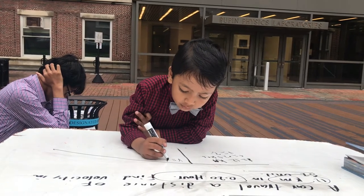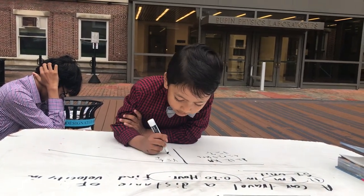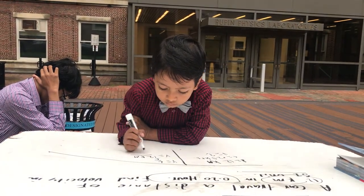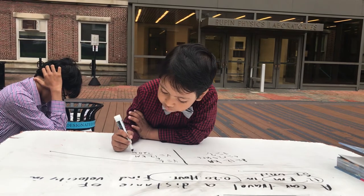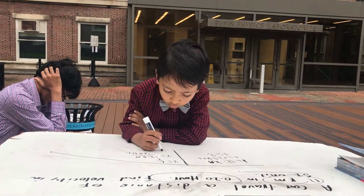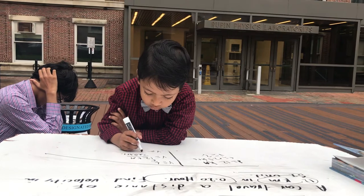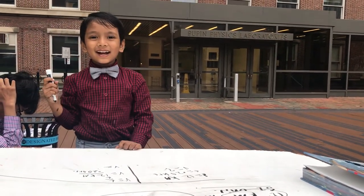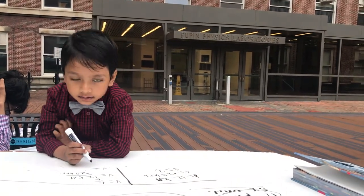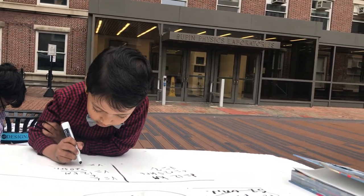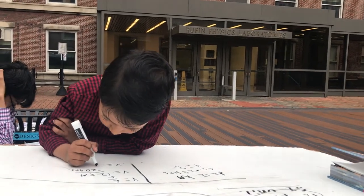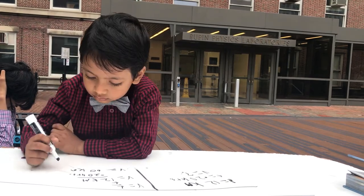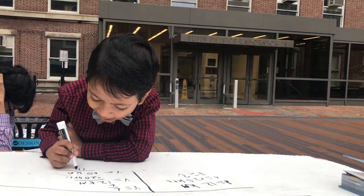Velocity is equal to distance over time. So, velocity is equal to 12 kilometers over 0.20 hours, which gives us 60 kilometers over 1 hour.